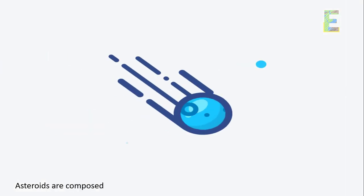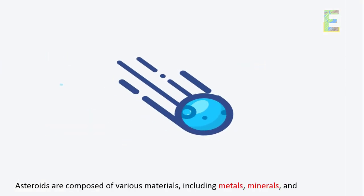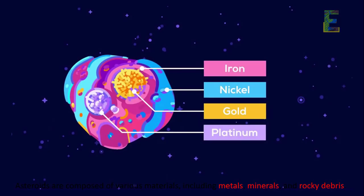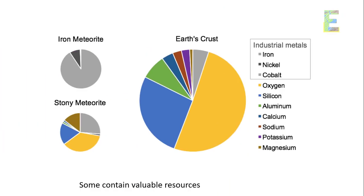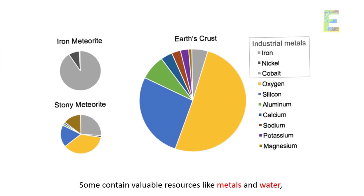Asteroid composition: asteroids are composed of various materials, including metals, minerals, and rocky debris. Some contain valuable resources like metals and water.